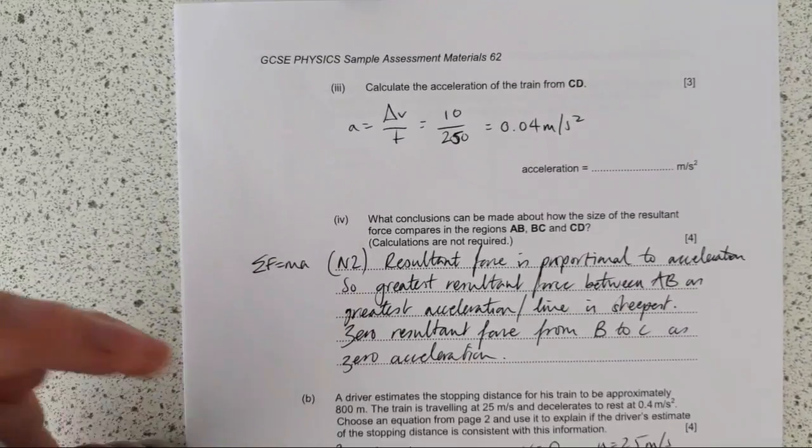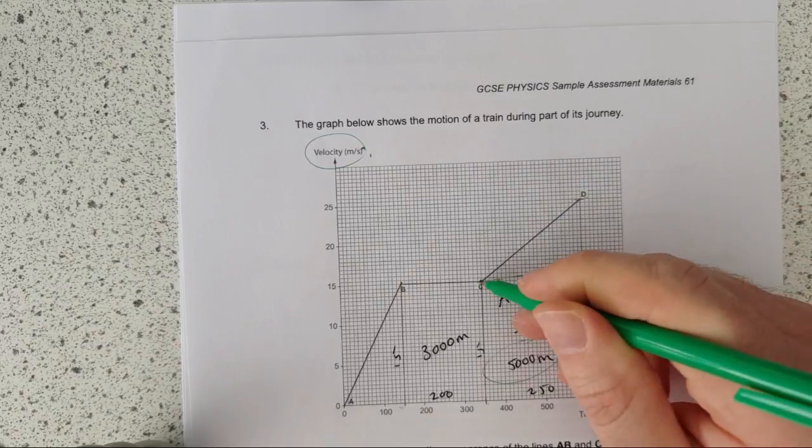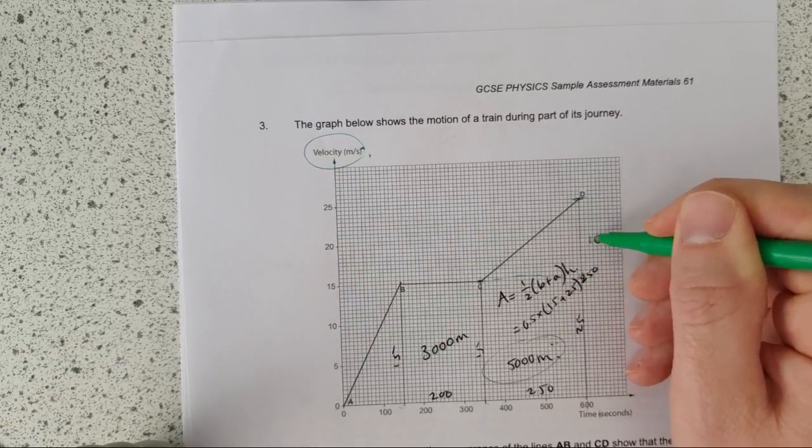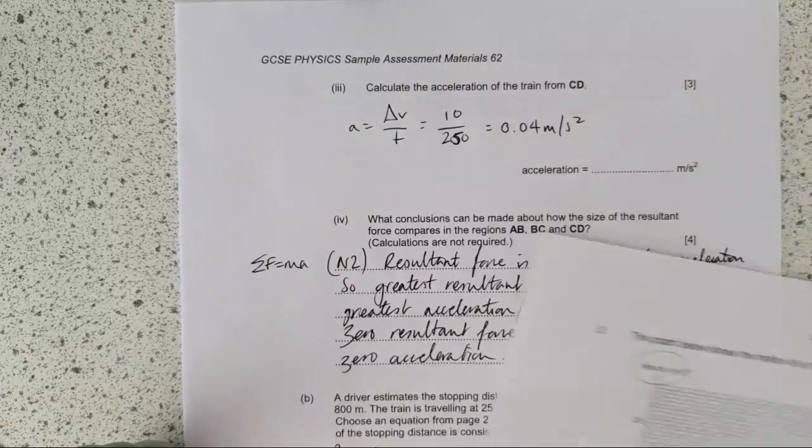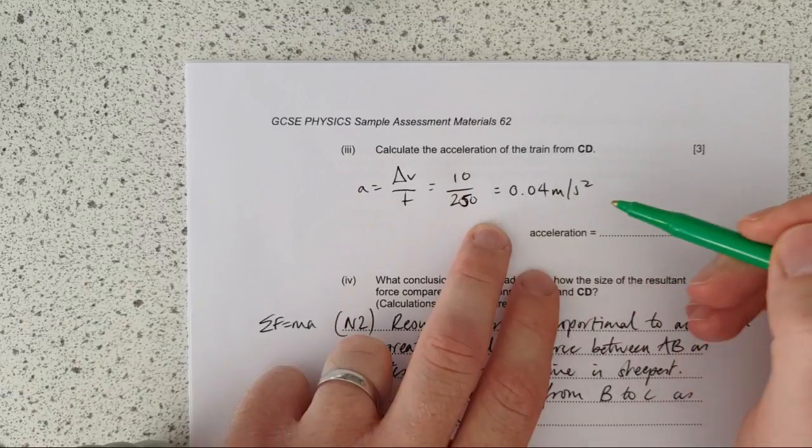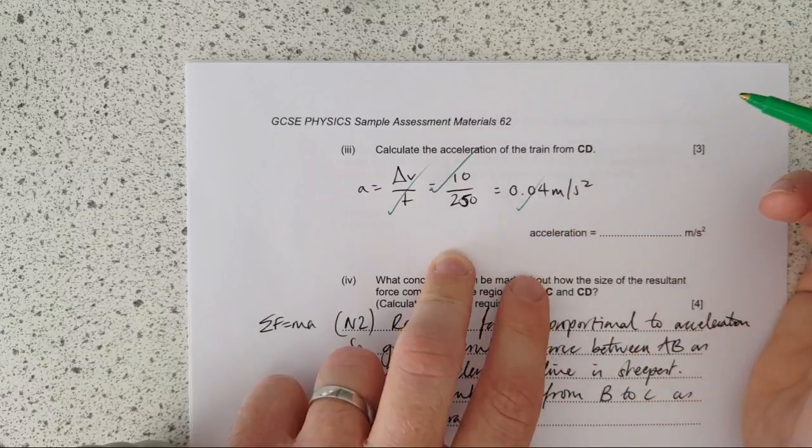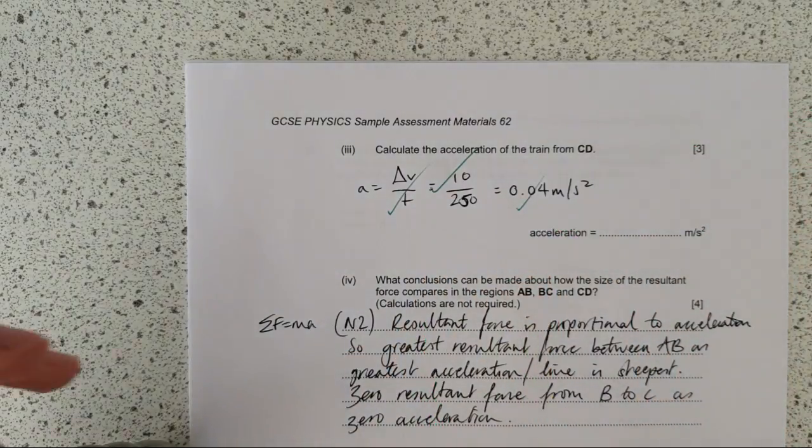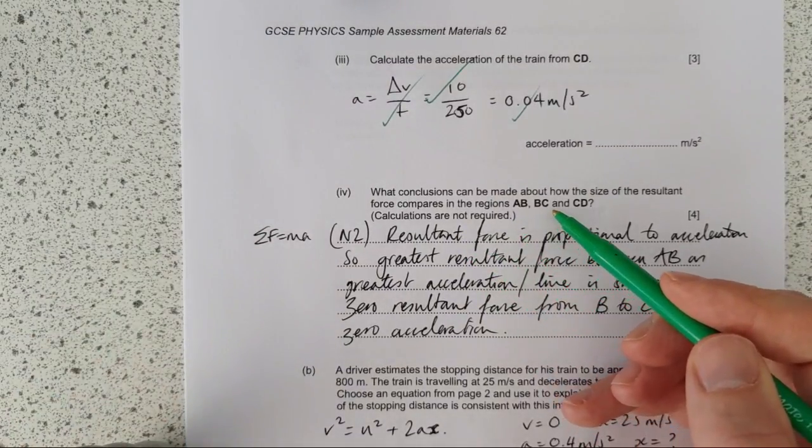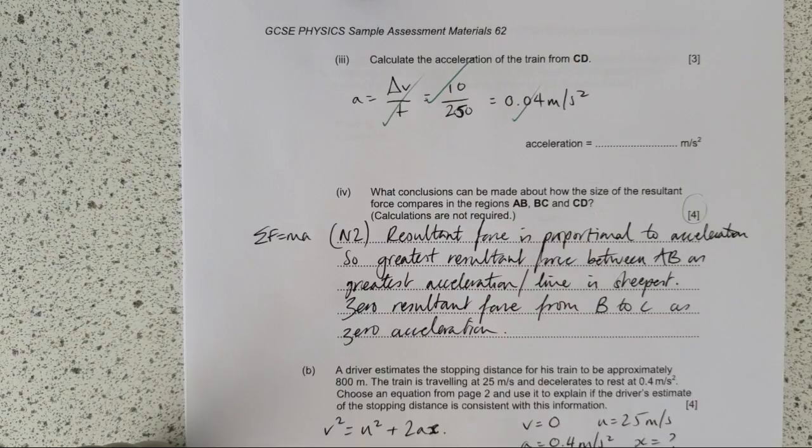Calculate the acceleration of the train from C to D. So then you have to use the gradient from C to D. Don't use the absolute values, don't read off the absolute values, use the change in. So the change in velocity is 10 and the time is 250. So you just read off delta V and T from the graph and you get 10 over 250, and that's the mark. What conclusions can be made about the size of resultant forces in the regions A to B, B to C, and C to D? Right, you don't need calculations, they've said that.